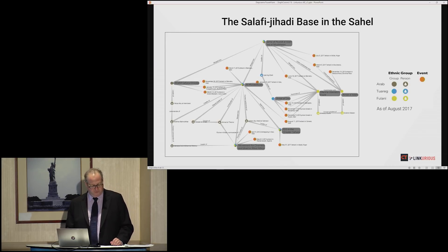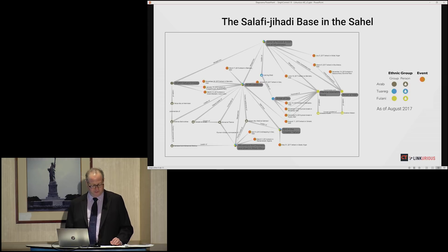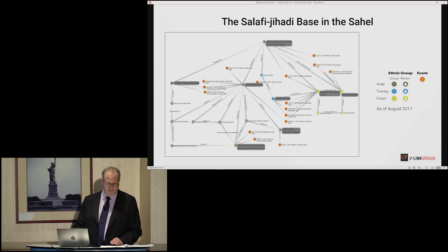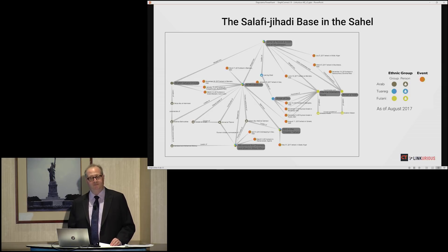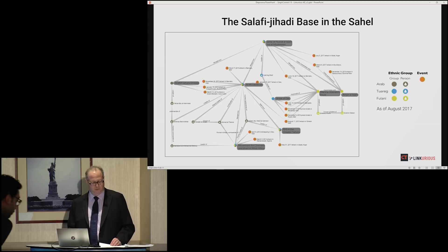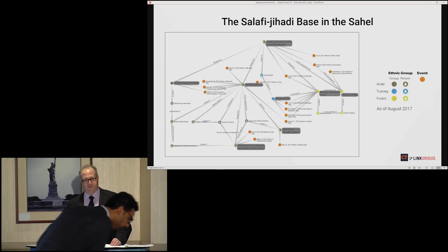We have published the results of our analysis using Linkurious, notably depicting the insanely complicated and overlapping relationships among individuals and groups in the Salafi Jihadi network in the Sahel region of Africa. We use Linkurious visualizations in many internal products as well, including weekly intelligence roll-ups and specific warning intelligence products.